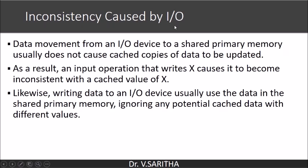Inconsistency can also be caused by I/O. When input is taken from input devices it goes to primary memory only, and this copy is not updated in the cache memory, creating a chance of inconsistency between cache and primary memory. Similarly, when sending data to an output device it is sent from primary memory. If primary memory is not completely updated, wrong data — not the updated and correct data — will be sent to the output device. This is inconsistency caused by I/O.